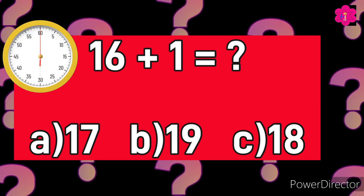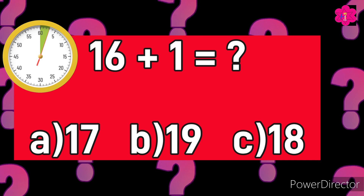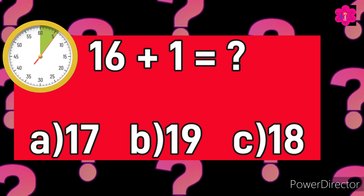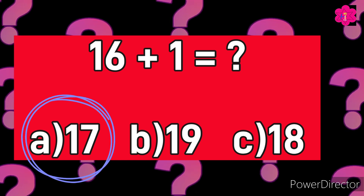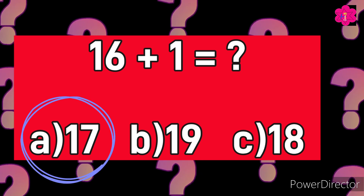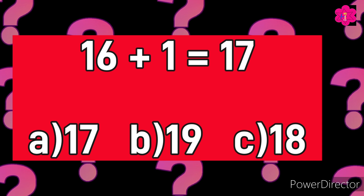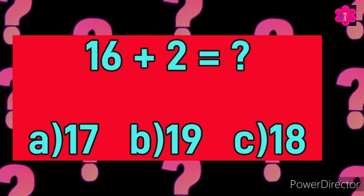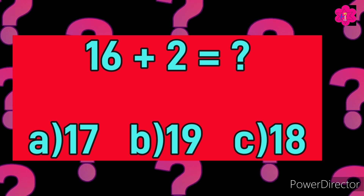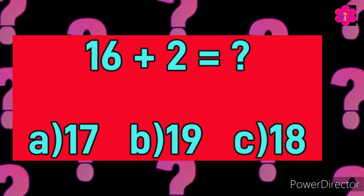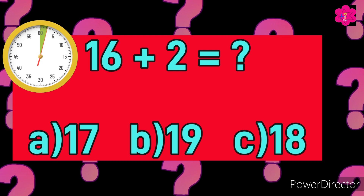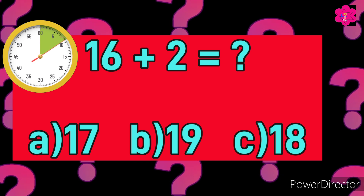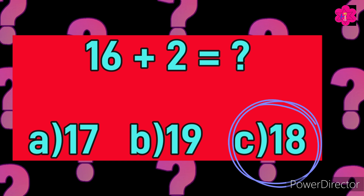The correct answer is A) 17. 16 plus 1 is equal to 17. Next sum: 16 plus 2 is equal to — and your options are A) 17, B) 19, and C) 18. Your time starts now.